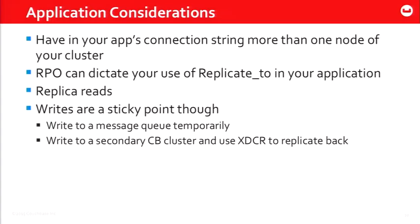Replica reads are another option in the Couchbase SDKs. When the node you're trying to read from is not available, you can tell the code to read from one of the replicas. This is not how you'd scale reads by default, but in a situation where high availability matters and you can't afford to not return data to the application, do a replica read.